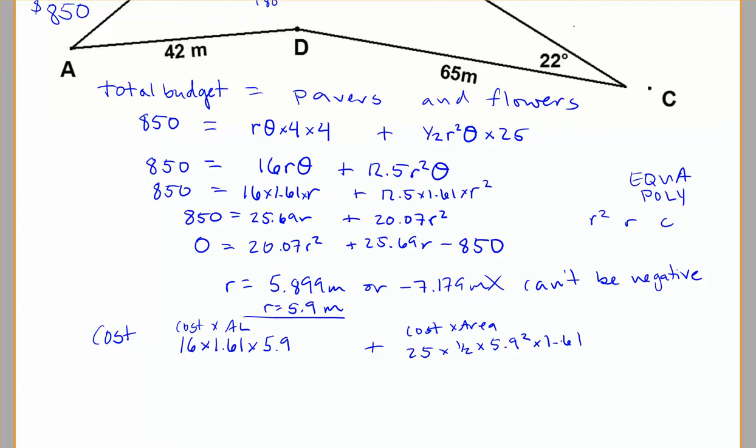So again, that's the cost times the arc length for the pavers. And then I'm going to have the cost of the flowers times the area. So that's 25 times 0.5 times 5.9² times 1.61. And working this one out, we end up here roughly rounding to... oops, sorry, that's all in one step.